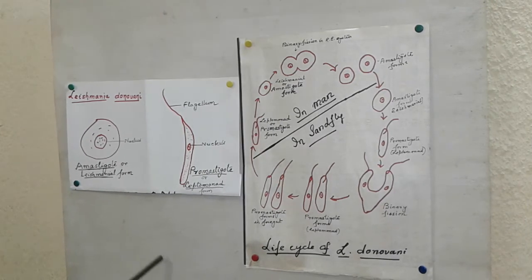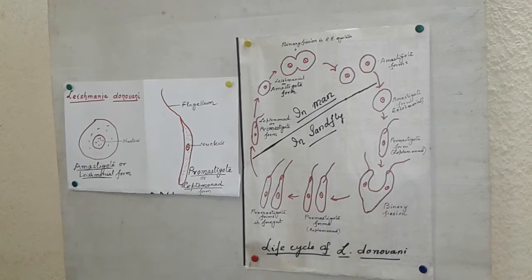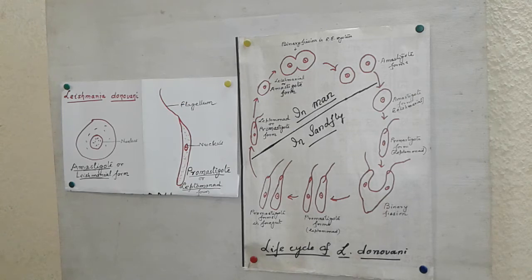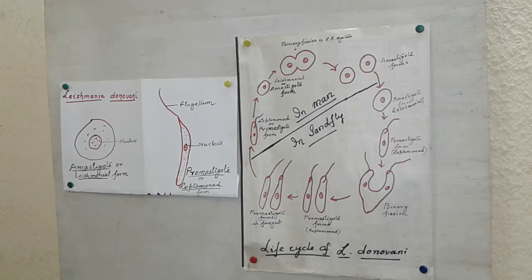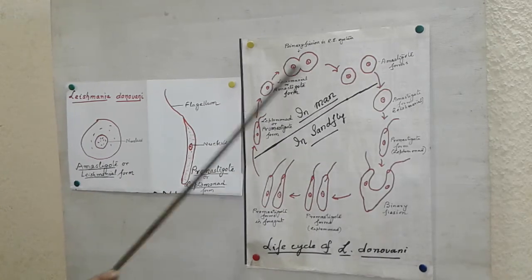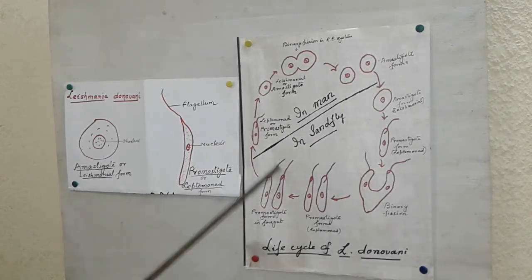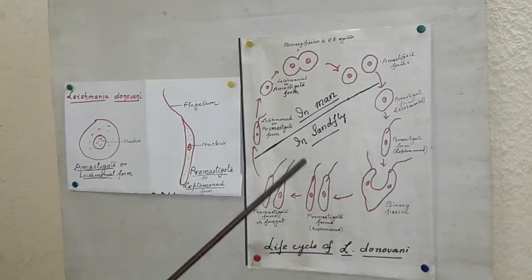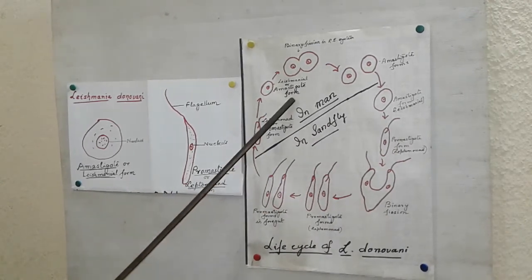Now life cycle. Here is the life cycle of the parasite. First of all we will discuss about the life cycle of the parasite in the vector that is sand fly. This part is for sand fly and this is for man. This part of the life cycle of this parasite is spent in sand fly or Phlebotomas and this part in man.